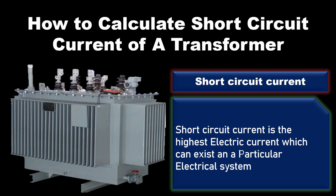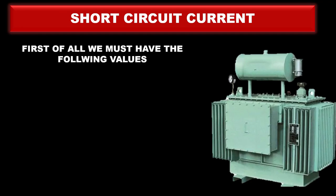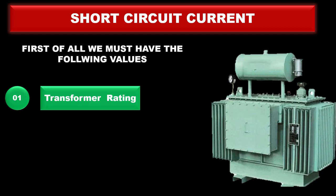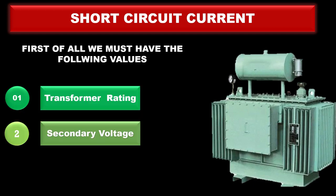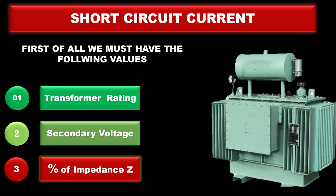Now how to calculate short circuit current? To calculate short circuit current, first we must know these three values: transformer rating, transformer secondary voltage, and the impedance of the transformer. Impedance of a transformer is always mentioned in the transformer name plates.